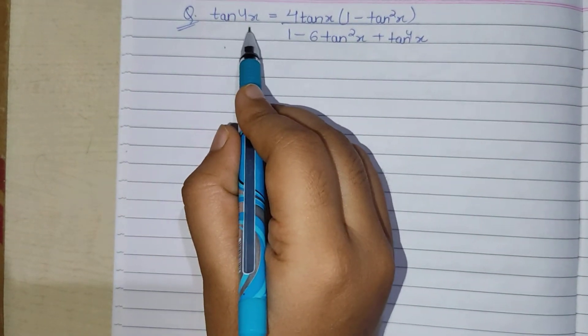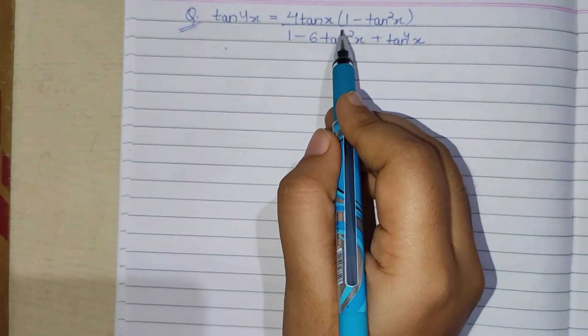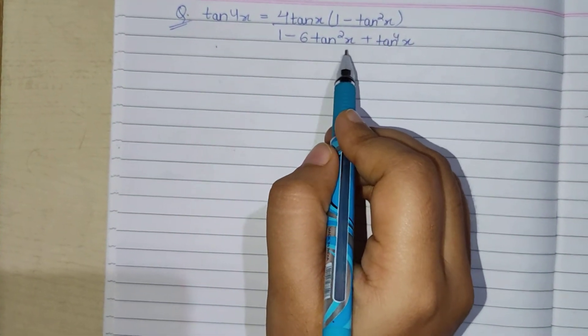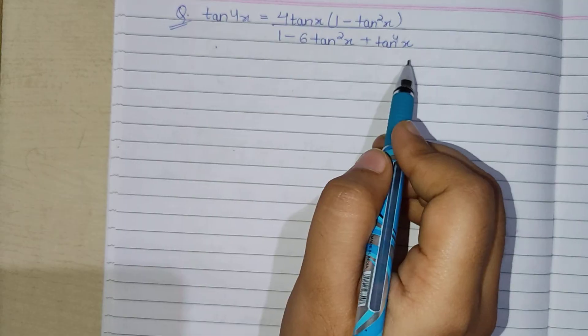Here we are having the question: tan 4x equals 4 tan x into 1 minus tan square x upon 1 minus 6 tan square x plus tan to the power 4x.